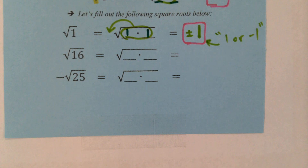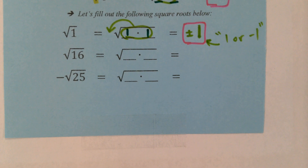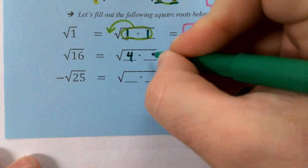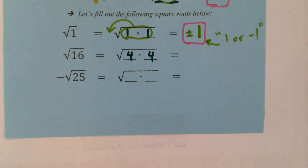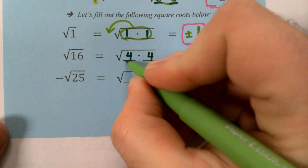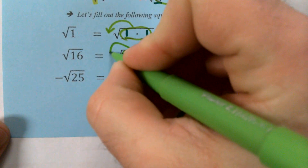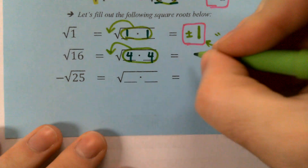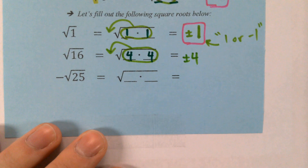What about the second one? What two numbers multiply to give me 16? Four and four — exactly right. Four times four. Some of you are probably wondering, this seems way too easy, where's the catch? There is no catch. The first lesson in these units is typically the simplest. We'll kick it up a notch as we move forward. We take those fours out, and our answer is going to be plus or minus 4.